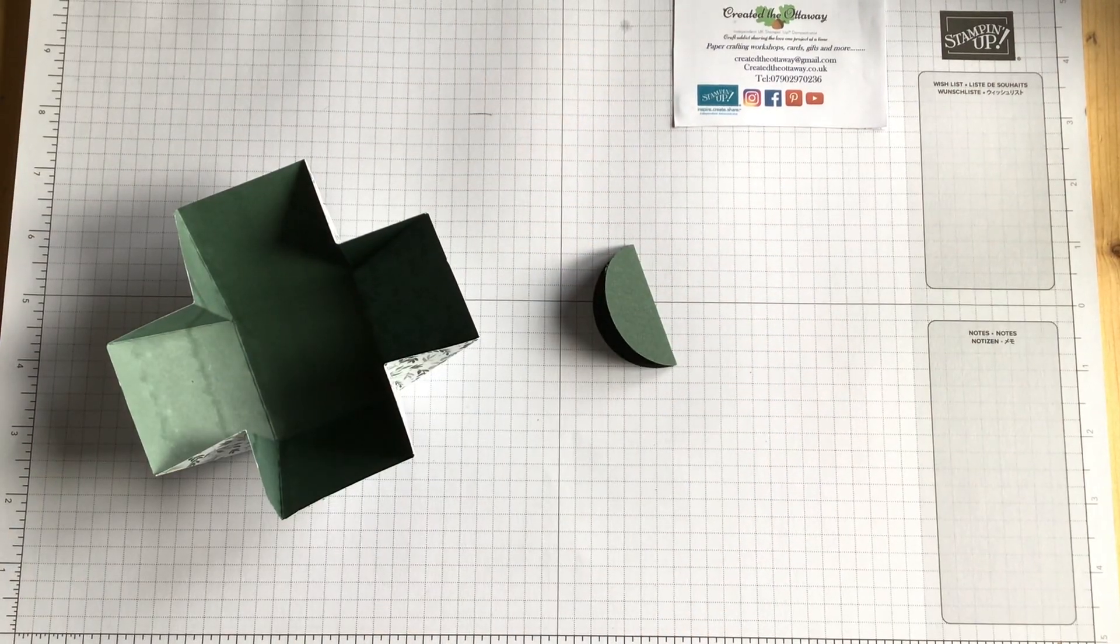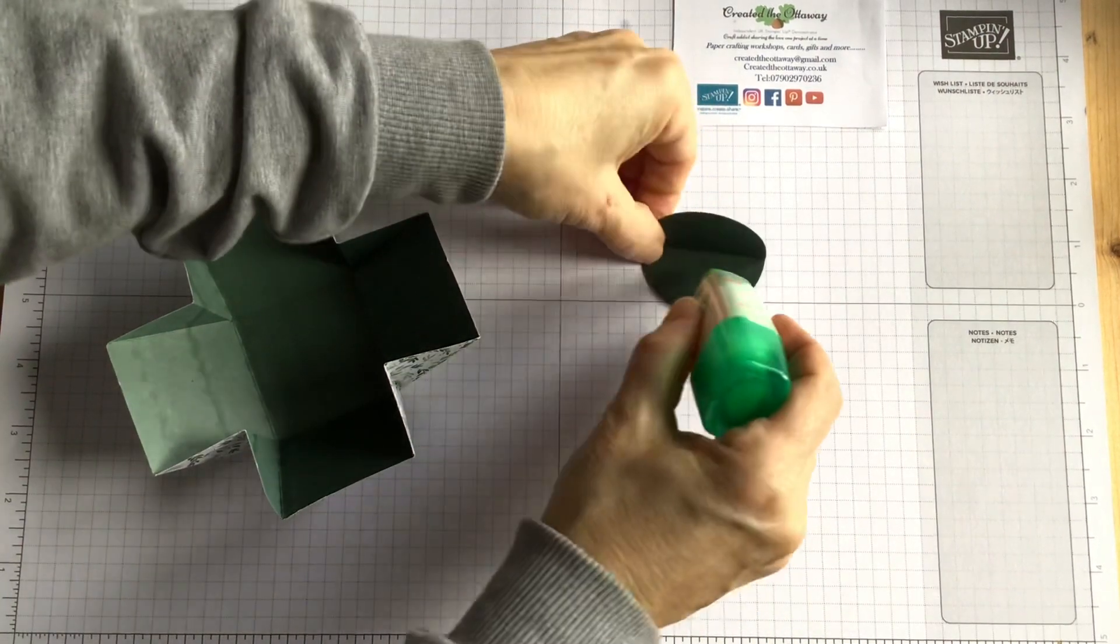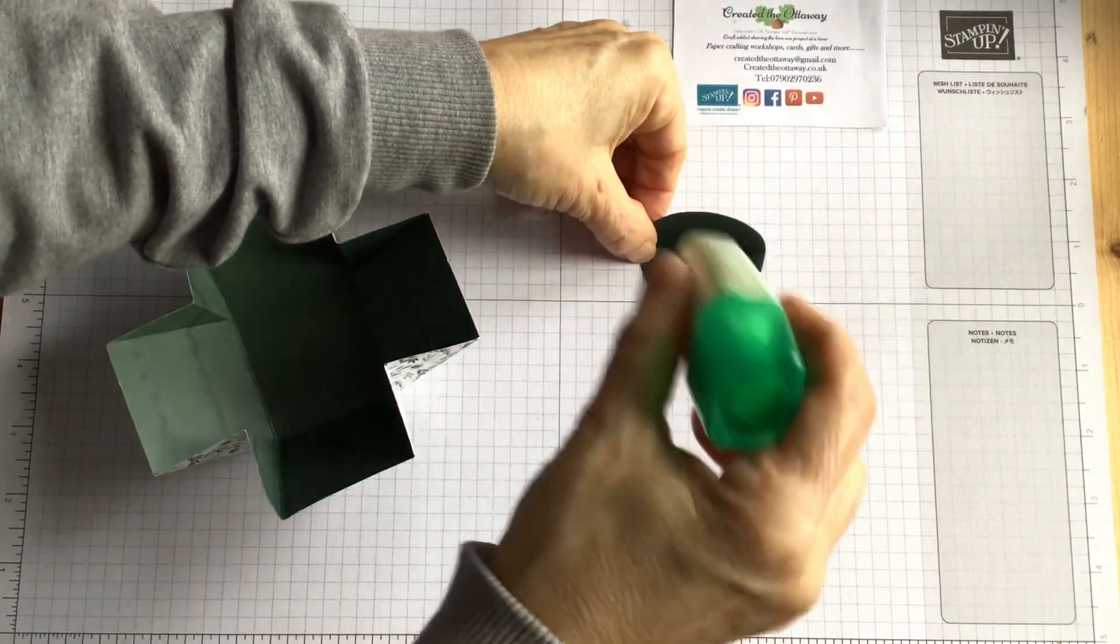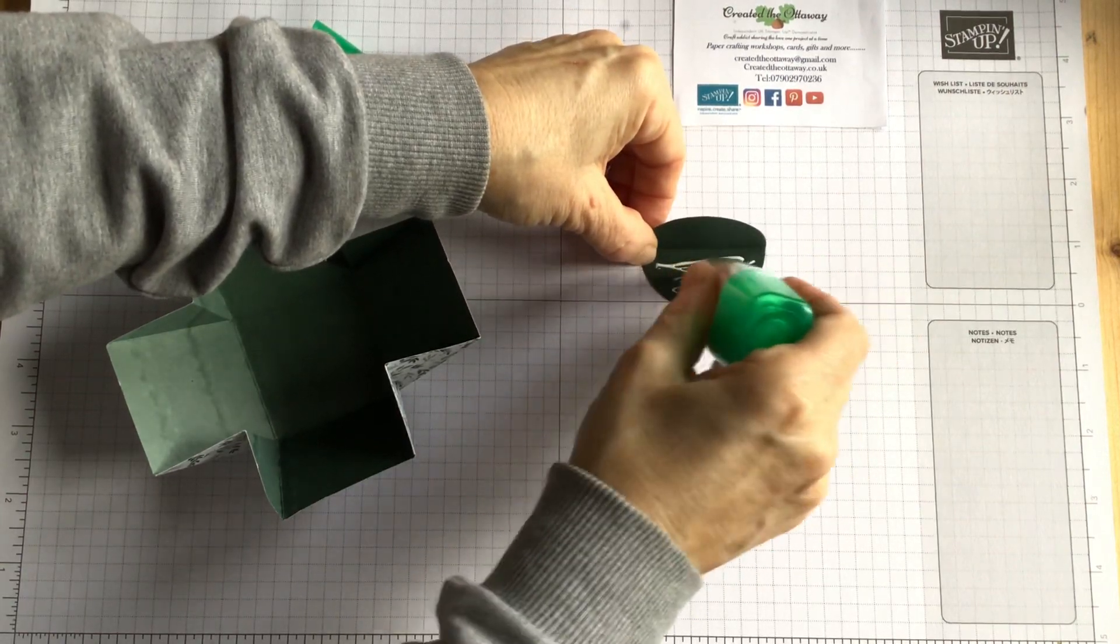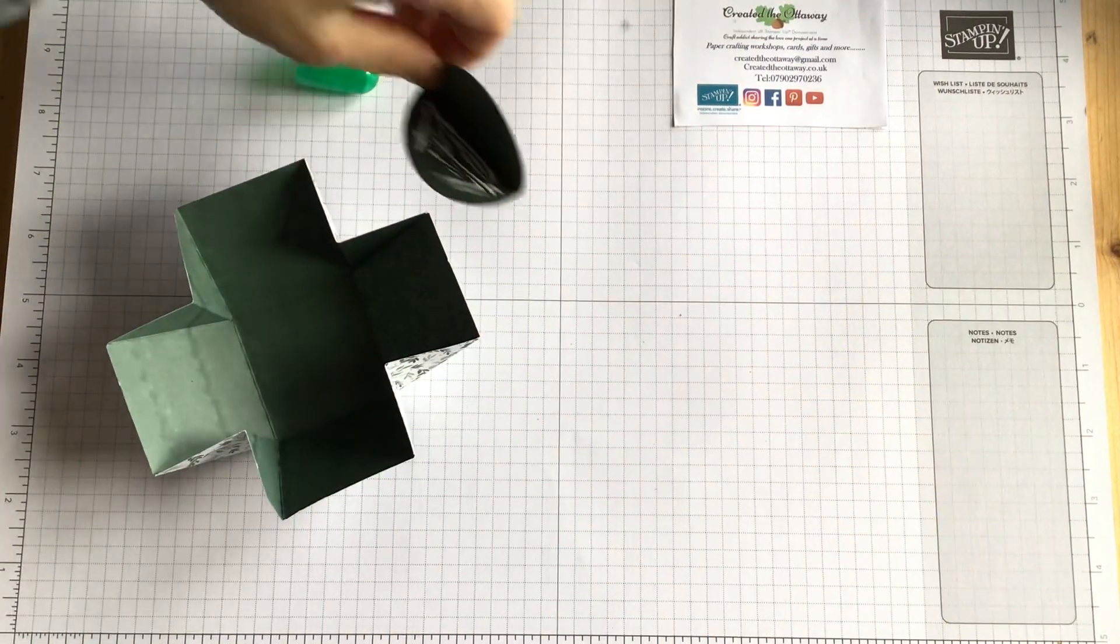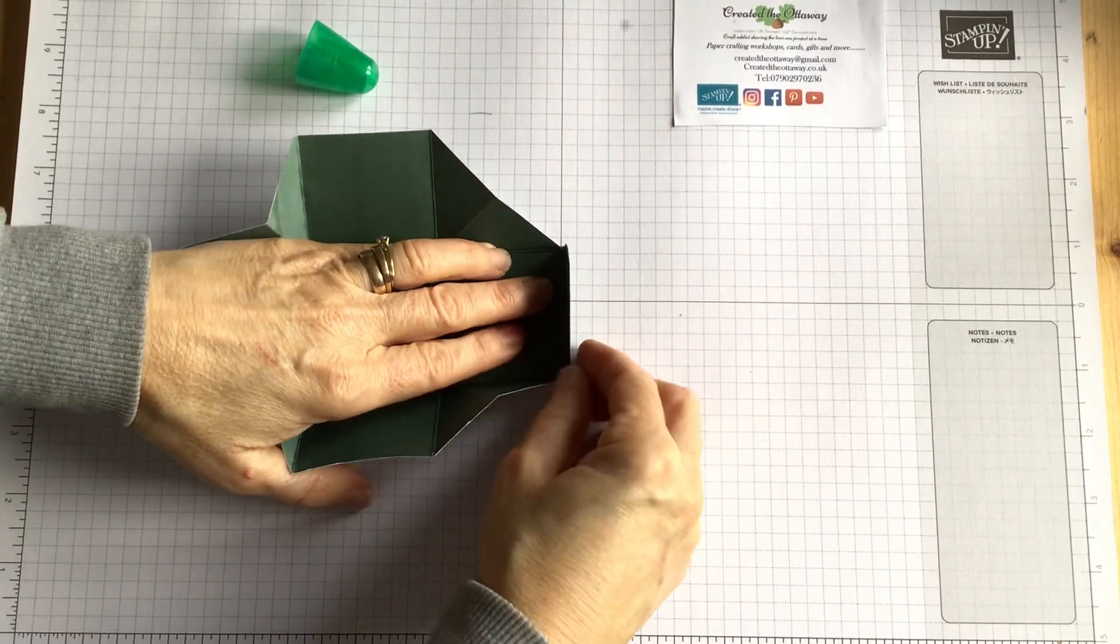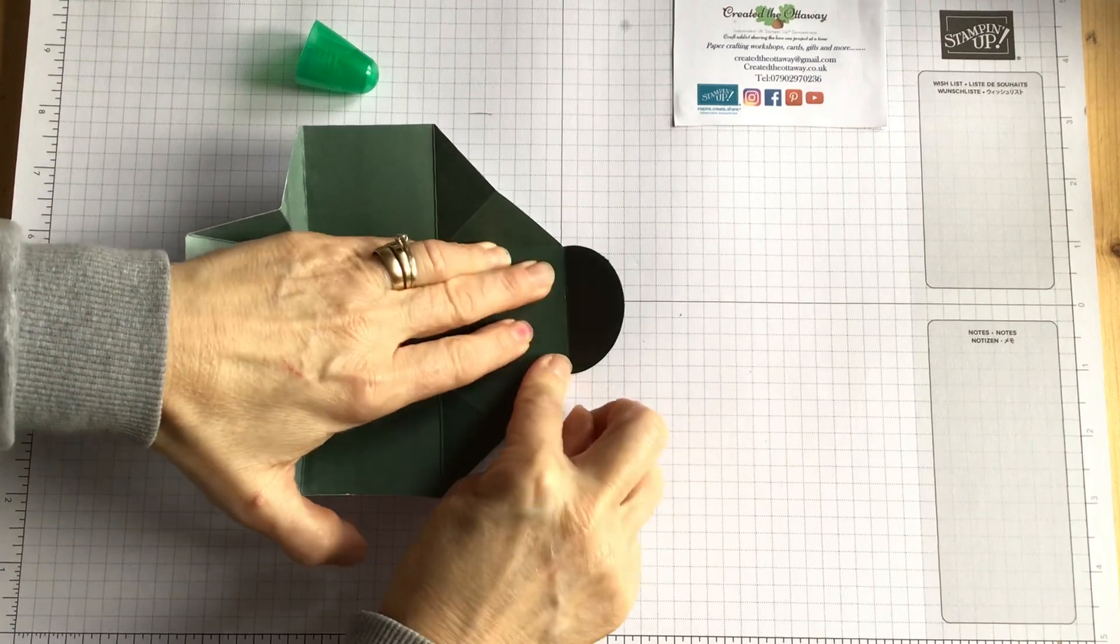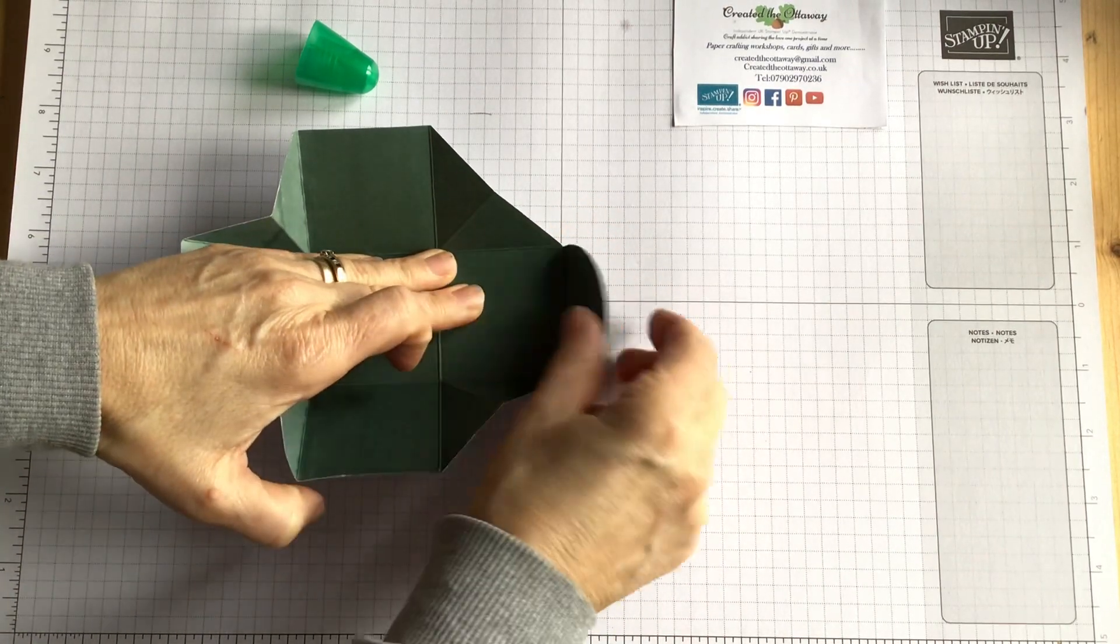And then you're going to need some glue. Put glue on one half of the circle. Oh, is it coming out? Yay. Okay, put that under one of the squares, doesn't matter which one. The half with the glue, tuck it under and just press that down.